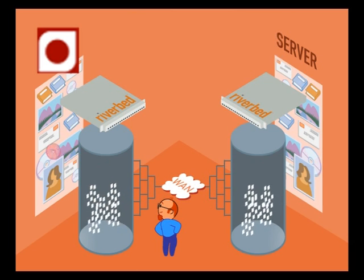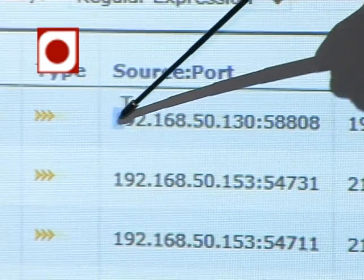The device comes in different models — from a small model suited for a branch with just two or three users, up to larger models for the head office. These devices can accelerate connections between sites across the internet, from site to site anywhere in the world, speeding up communication over long distances.